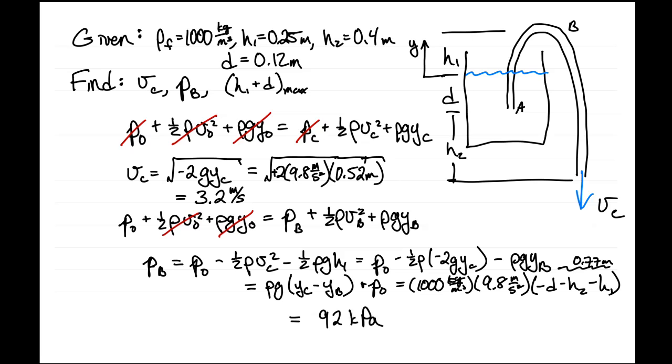Now we want to figure out what the maximum height is that we can have our siphon draining water from. Again, we can write Bernoulli's equation between the surface of the water and point B. In this case, water will stop flowing when the pressure at point B drops to zero. That's going to be zero. We already know that the surface velocity is zero and height at the surface is zero. We know what VB² is.